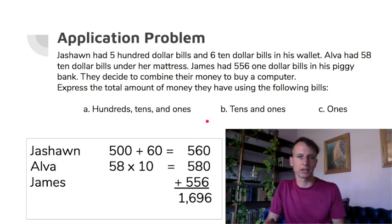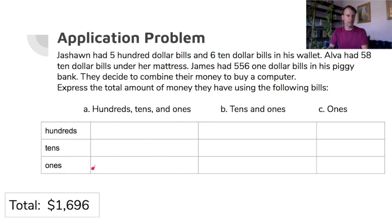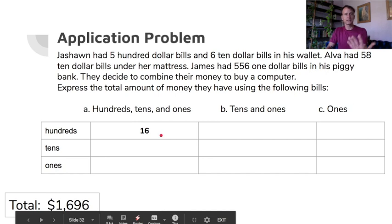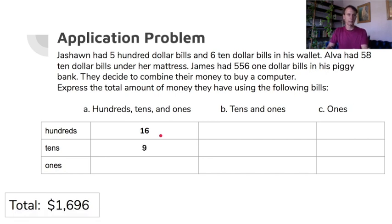Nice job — you can actually get a MacBook! So $1,696: let's put that into how many hundreds, tens, and ones. If you look at hundreds — it's sixteen hundreds, because you still have the ten hundreds for the thousand. Then how many ten-dollar bills? Nine. How many one-dollar bills? Six. So: sixteen hundreds, nine tens, six ones.